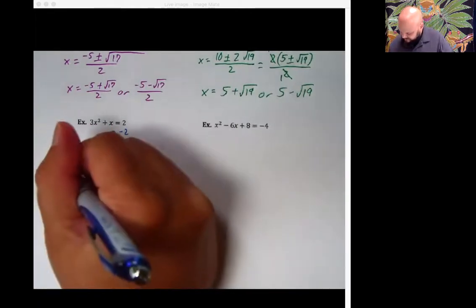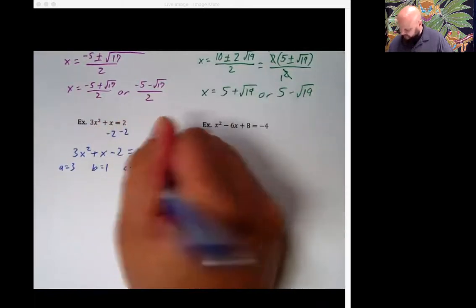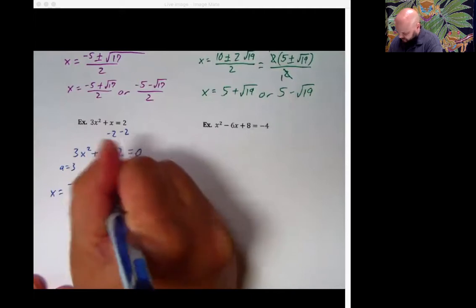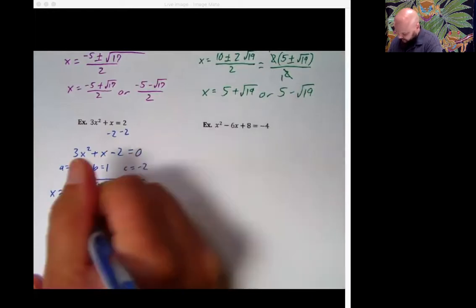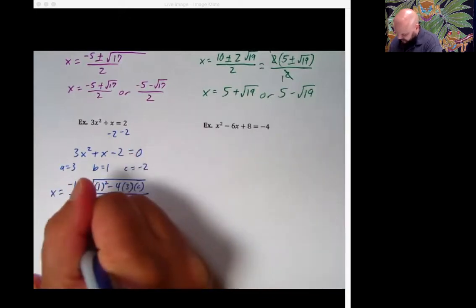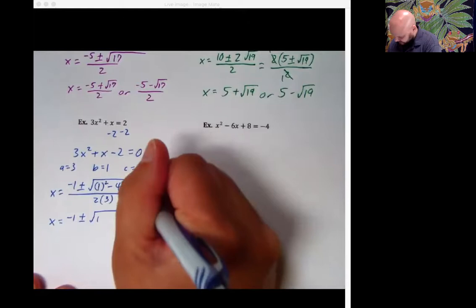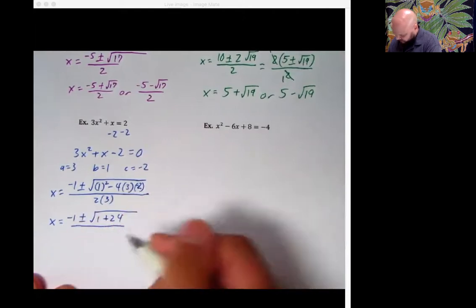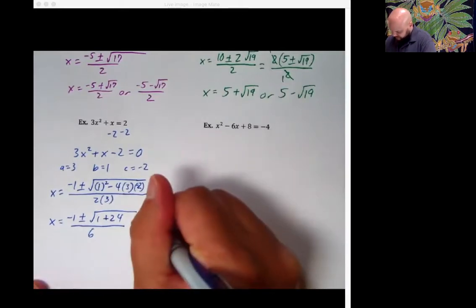a is equal to 3, b is equal to 1, c is equal to negative 2. We plug them into all the right spots. x equals opposite b, so negative 1, plus or minus the square root of b squared, that is 1 squared, minus 4 times a times c, all over 2a. Take that to another step of work, and we get negative 1, plus or minus the square root of 1. Did I just write c there instead of negative 2? Wow. Bravo me. negative 1 plus 24 over 6.